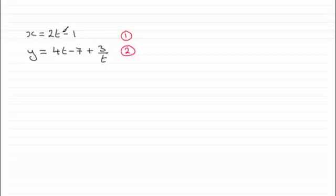So if we make t the subject from that first equation, then if I add 1 to both sides and divide by 2, I'm going to get t equaling x plus 1 all divided by 2. So we've got that.